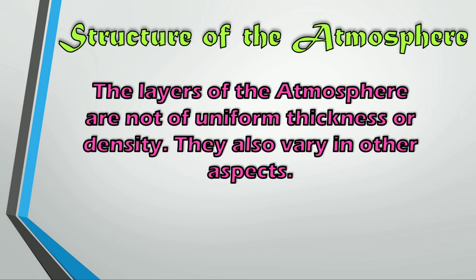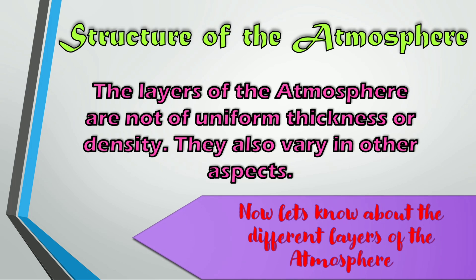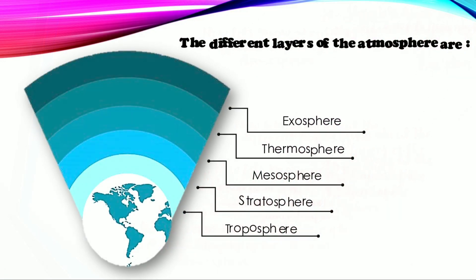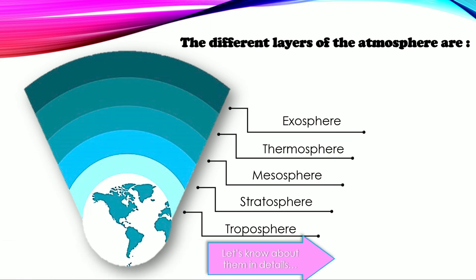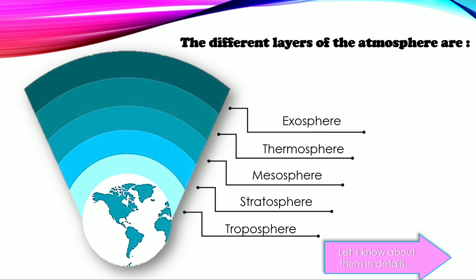The layers of the atmosphere are not of uniform thickness or density. They also vary in other aspects. The different layers of the atmosphere are exosphere, thermosphere, mesosphere, stratosphere, and troposphere. Let's know about them in detail.